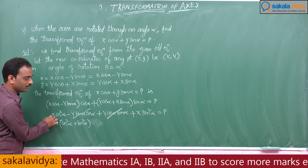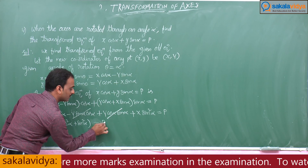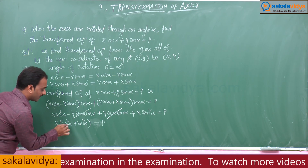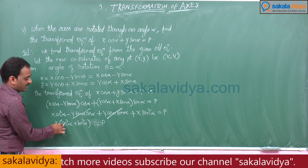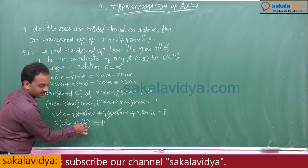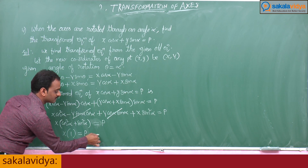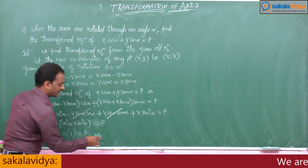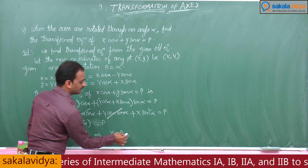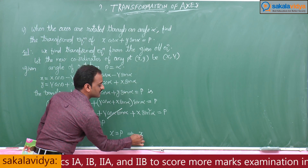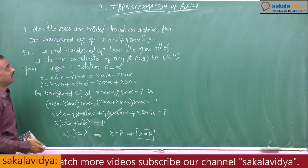So, X into (cos squared alpha plus sin squared alpha) is equals to p. From the trigonometric identities, cos squared alpha plus sin squared alpha is always equals to 1. So the required transformed equation is X equals to p.